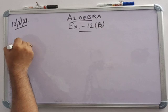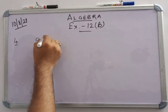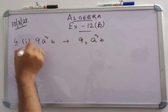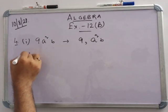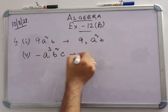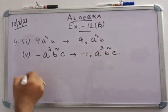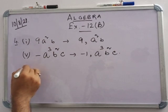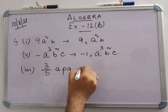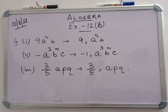In question 4, write the literal coefficients of the following monomials. For 9a squared b, the numerical coefficient is 9 and the literal coefficient is a squared b. For minus a cubed b squared c, this equals minus 1 times a cubed b squared c, so the literal coefficient is a cubed b squared c. For 3 by 5 ap cubed, the numerical coefficient is 3 by 5 and the literal coefficient is ap cubed.